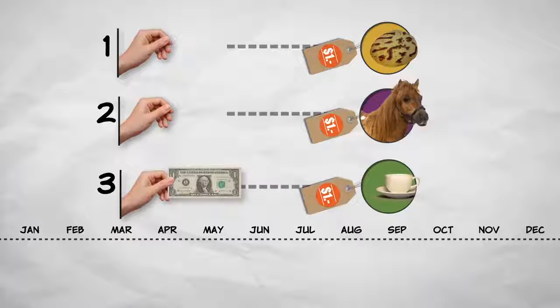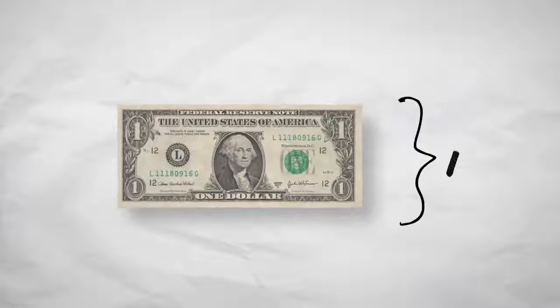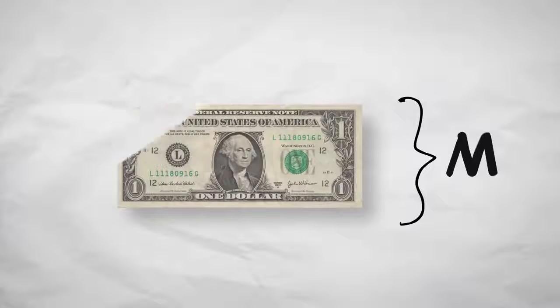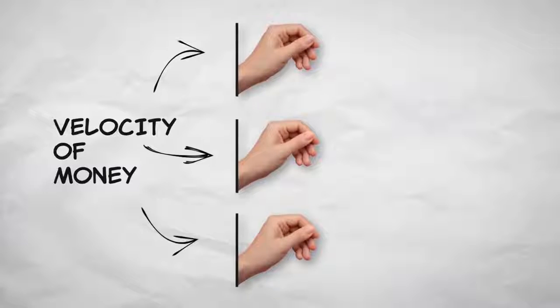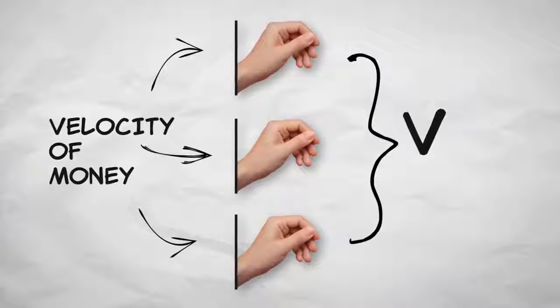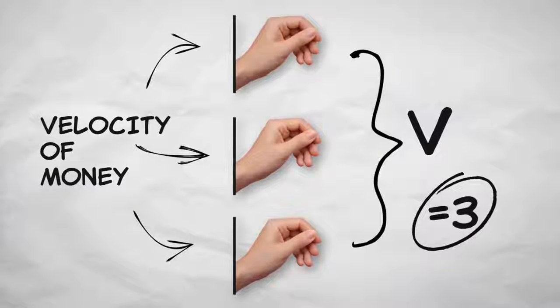We've got the building blocks to understand the quantity theory of money already. Our dollar bill, that's money, which we represent with the letter M. How many times that dollar gets used in a year is called the velocity of money, which we'll label with a V. In this case, V is three, as our bill was spent three times in a year.